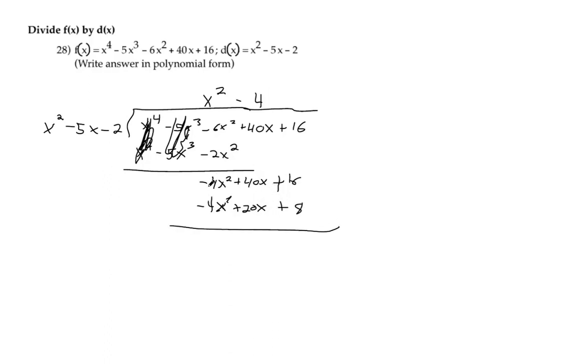And we can subtract the top by the bottom. That makes this cancel out. That makes 20x. That makes 8. So this is our remainder because there's nothing else to carry down.